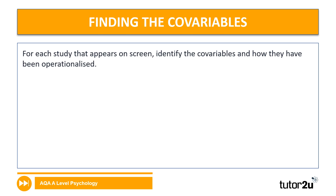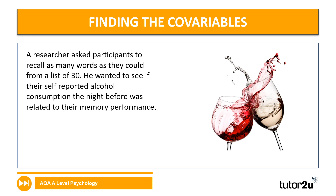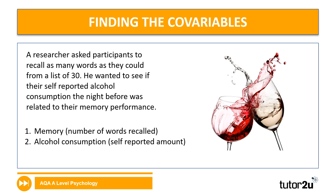Now you're going to have a go. A piece of research will appear on screen — use the space in your booklet to write down what the co-variables are, and pause the video to give yourself time to consider. Here's the first one: a researcher asked participants to recall as many words as they could from a list of 30. He wanted to see if their self-reported alcohol consumption the night before was related to their memory performance. The co-variables are the number of words recalled and the self-reported amount of alcohol each participant was drinking.